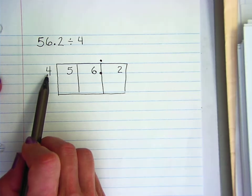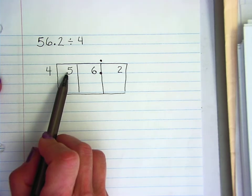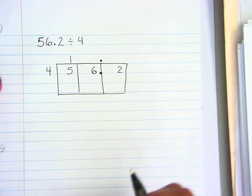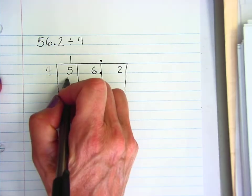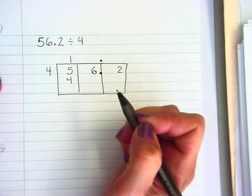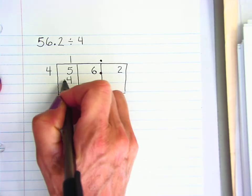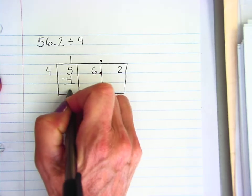So the first step is to divide. 4 goes into 5 one time. My next step is to multiply. 1 times 4 is 4. Next step is to subtract. 5 minus 4 is 1.